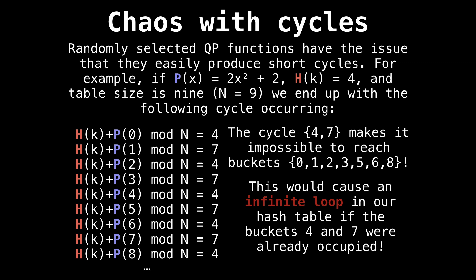So our probing function is only ever able to hit the buckets 4 and 7, making it impossible to reach all the other buckets 0, 1, 2, 3, 5, 6, and 8. So we're stuck in an infinite loop when 4 and 7 are already occupied. This is really, really bad.